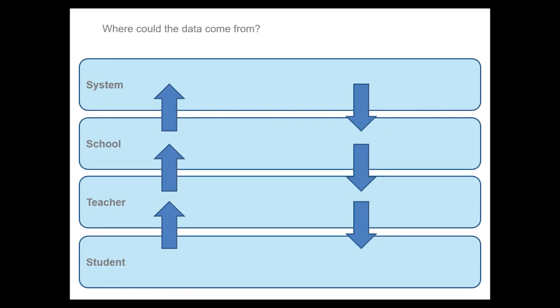Where could all this data come from? There are four particular areas: the data can come from the student, from the teacher, the school, and the system. It should go round — it shouldn't get stuck anywhere, it shouldn't be a one-way track. As the information goes up the system, the system should also be able to feed information back down. Data doesn't necessarily need to be grades or levels.